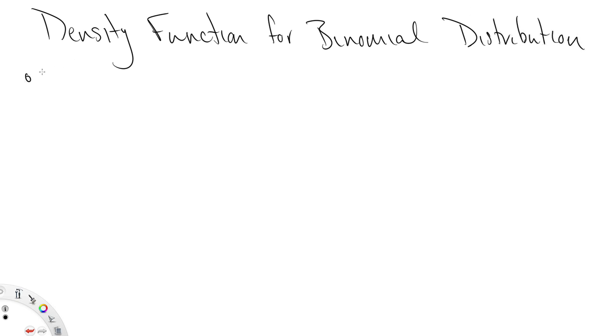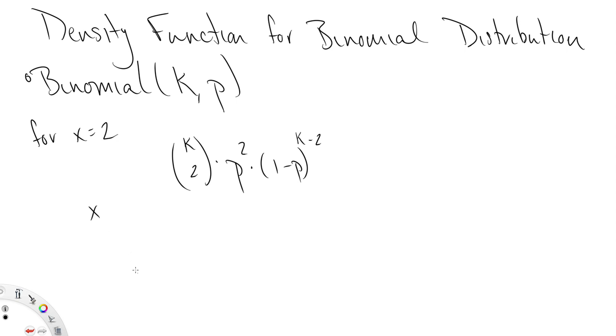Let's suppose we're working with a binomial k,p distribution. Then for x equals 2, we have the probability of any individual sequence of 1's and 0's equal to p to the second, because we only saw two 1's, and each 1 has a probability of p, and we can multiply those together because they're independent, times 1 minus p. If there's k total positions, and two of them are filled with p, then the other k minus 2 have 1 minus p. And there are, in fact, k choose 2 ways to observe two 1's in k positions.